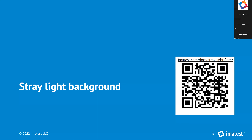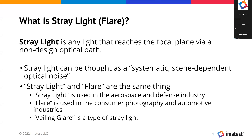Starting with the background. First of all, what is stray light? Stray light is any light that reaches your focal plane or your image sensor via a non-design optical path. This is the definition from the IEEE P2020 standard that's in development. We'll talk a little bit more about standards later. 砸闪光是任何的光线，它是非预期的，而且是非设计的一个光学的路径，进入到成像的平面。这是由IEEE P2020所定义的。